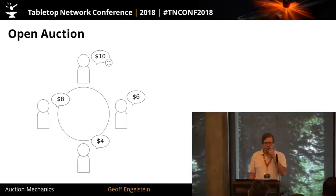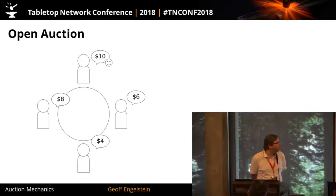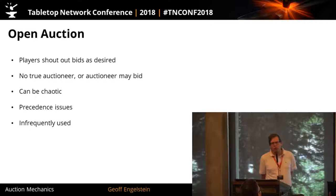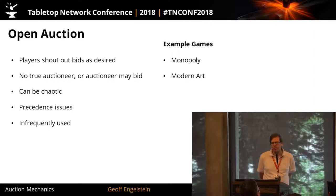First is an open auction — what a lot of people think of as the default type. People can just shout out whatever they want; there's no structure. When the person says the highest number and nobody else wants to go higher, that person wins. There's typically no true auctioneer in this one, or the auctioneer may bid on occasion. Because there's no structure, it can be chaotic — there can be issues of who said the bid first. It is very infrequently used in games. Monopoly has it to a certain extent, as does Modern Art with a player acting as auctioneer.